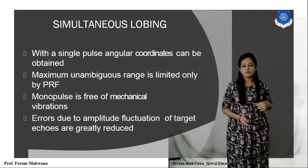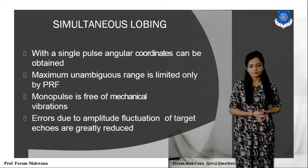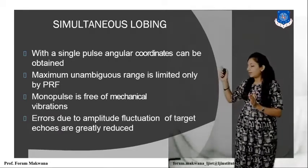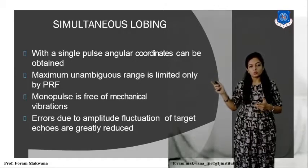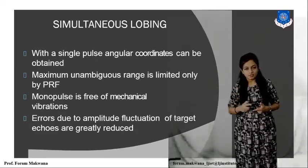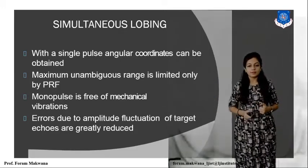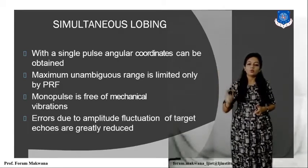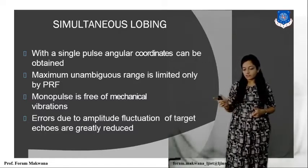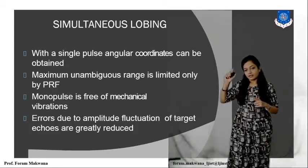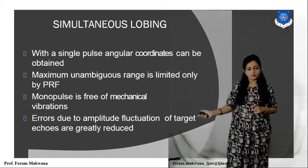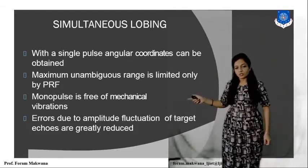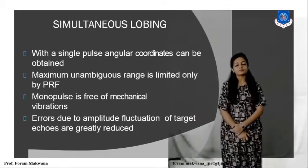The third method is simultaneous lobing. With a single pulse, angular coordinates can be obtained. We are able to determine the maximum unambiguous range, but it is limited by the pulse repetition frequency. This simultaneous lobing includes the monopulse — we transmit only a single pulse, which is free of mechanical vibration. The error due to the amplitude fluctuation of target echoes is reduced with the help of simultaneous lobing. This is the error of conical scan and sequential lobing.